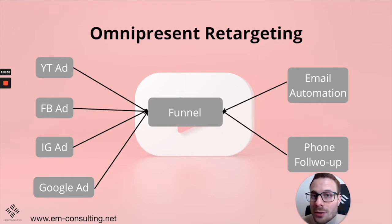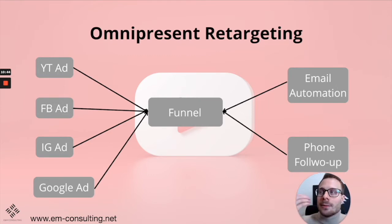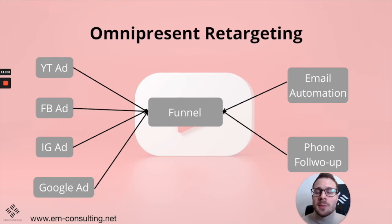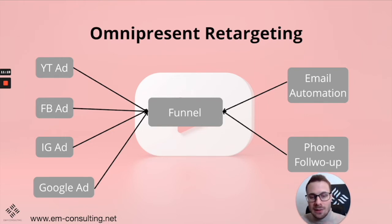You can also follow up via email automations. Since we've been collecting email addresses in the application form, you can have an automated email sequence using something like ActiveCampaign or Mailchimp. That works well too — giving out content and value via email with call-to-actions. You can also follow up via phone if you're asking for a mobile number in your opt-in or application form. If you have a sales team, you can call those leads and ask if there's still a need for your service.